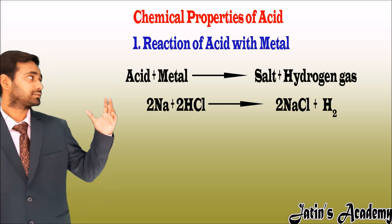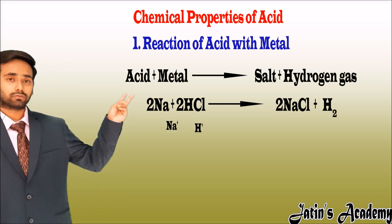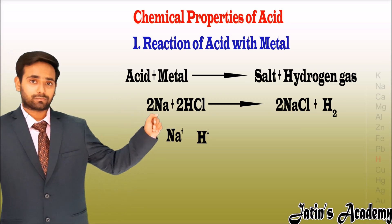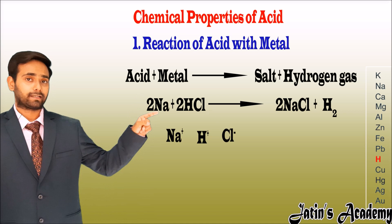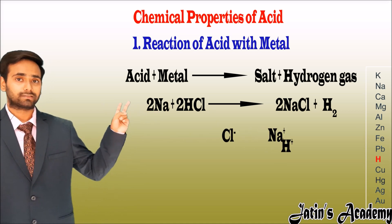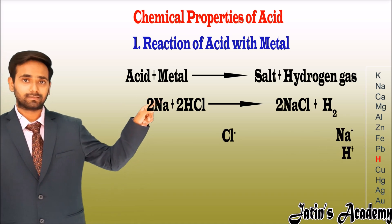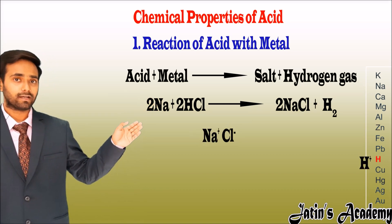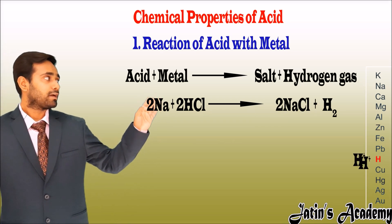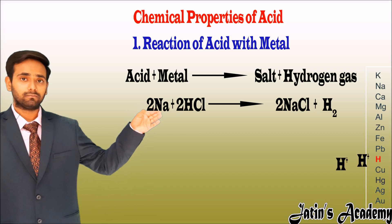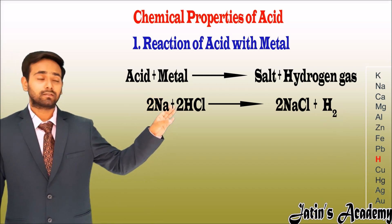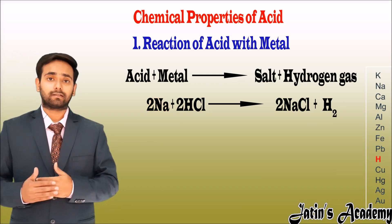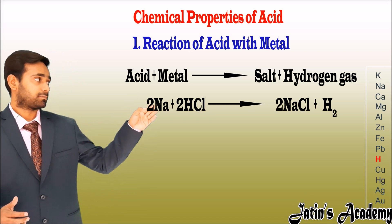Why is it called a displacement reaction? There are two positive ions — Na⁺ and H⁺ — and one negative ion. Comparing these two with the reactivity series, Na is more reactive, so Na takes the negative ion and becomes NaCl, while the two hydrogen atoms become H₂ gas.